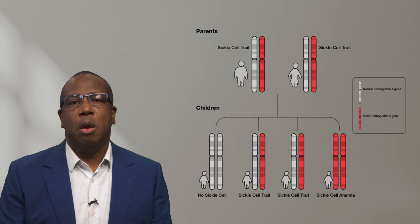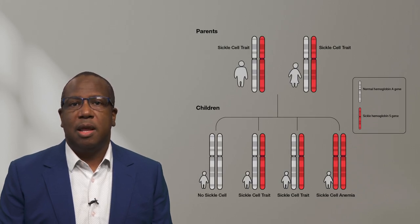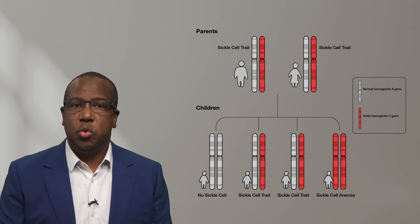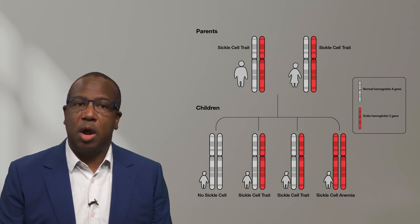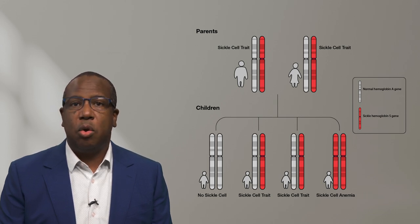Individuals with sickle cell disease inherit two hemoglobin gene variants — one from their mother and one from their father. They can have two hemoglobin sickle genes, or one sickle hemoglobin and another hemoglobin variant such as hemoglobin C or beta-thalassemia.